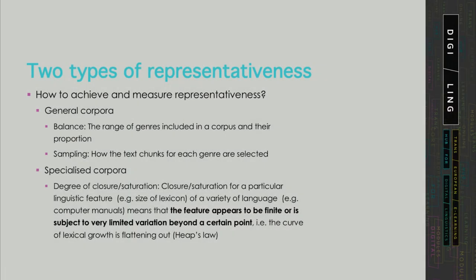There are two ways of achieving representativeness in corpora. One way generally holds for general corpora, where we speak of balance — balance is the feature which measures the range of genres included in a corpus and their proportion. Sampling refers to how the text chunks or entire texts for each genre are selected. Perhaps more importantly for us, for specialized corpora, we sometimes measure or express representativeness with the degree of closure or saturation, and what is meant is lexical saturation.